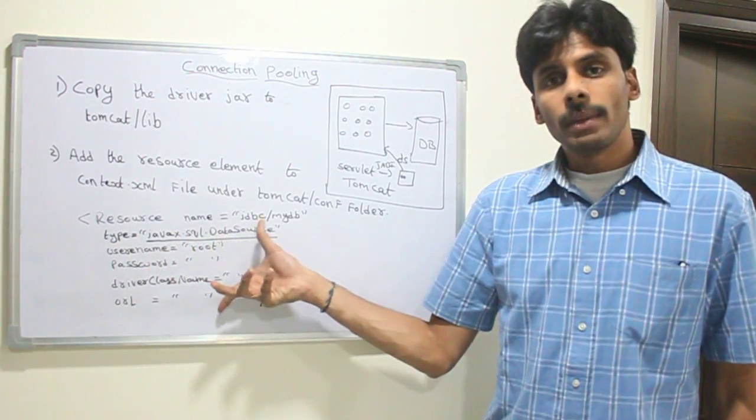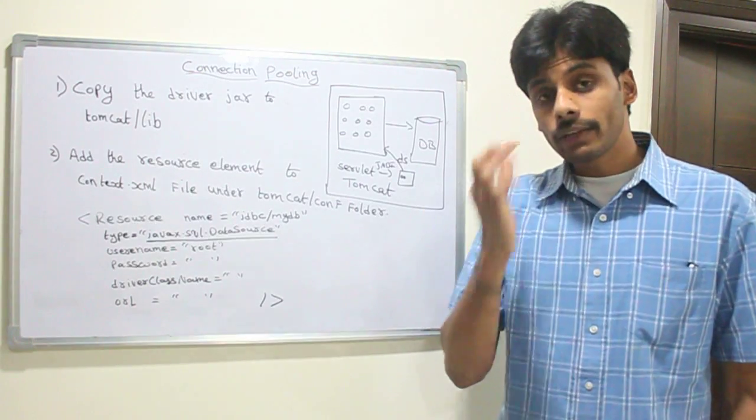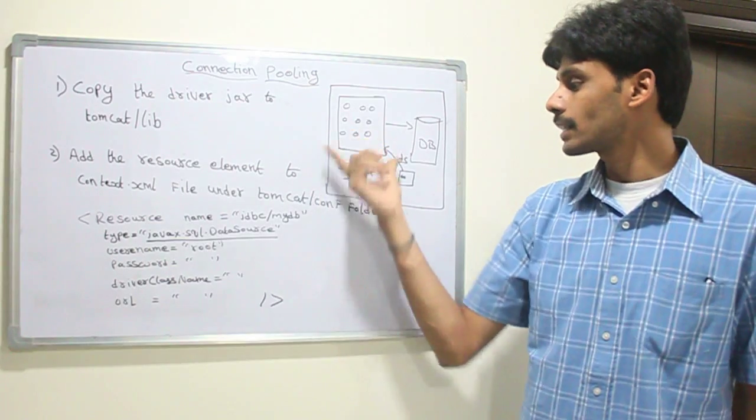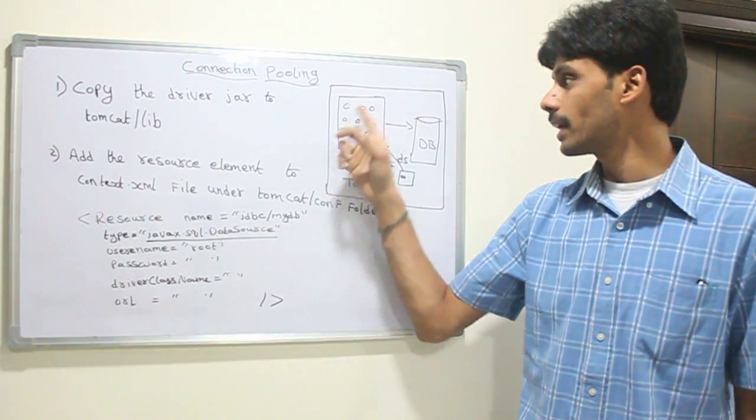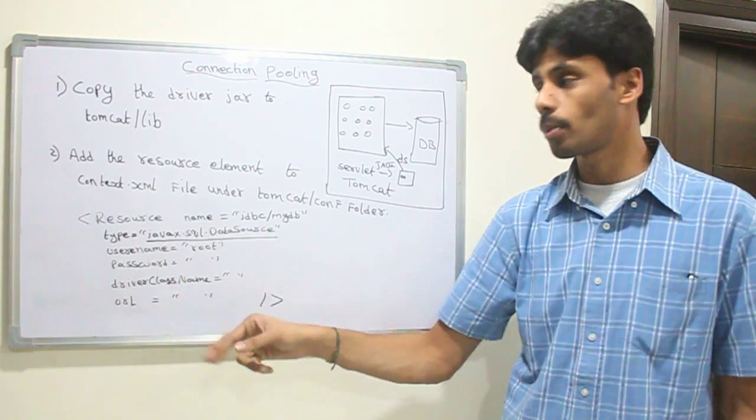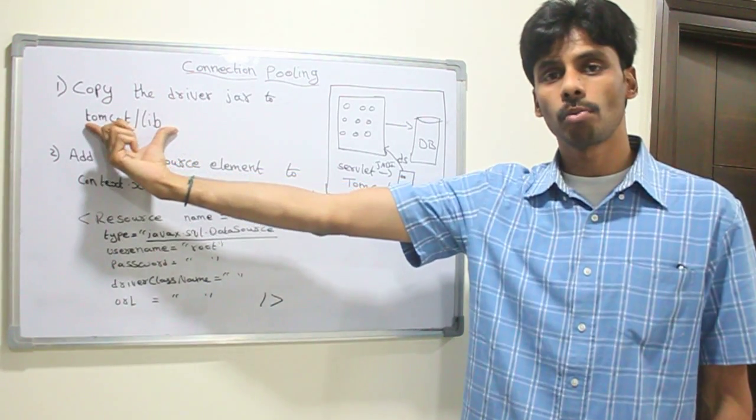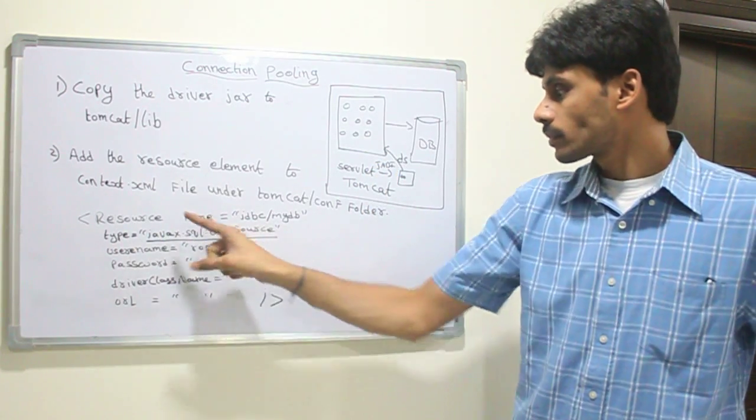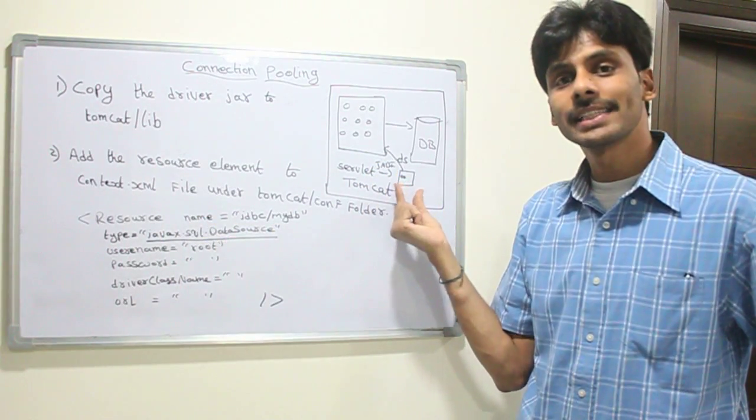So when you give this element and when you start your Tomcat, Tomcat reads this element from the context.xml. It creates the number of connections you have specified using the resource element, puts them in the pool using the information like driver class name, using the driver you have provided and the driver you have put into the lib folder. And it creates this DSN and puts it into a JNDI server.